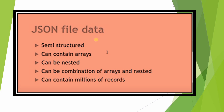Semi-structured JSON data does not follow the tabular structure of relational databases. It contains tags and metadata to separate semantic elements, which are divided by key-value pairs. We cannot directly convert this data into tabular format — we have to parse it. JSON files can also contain arrays.